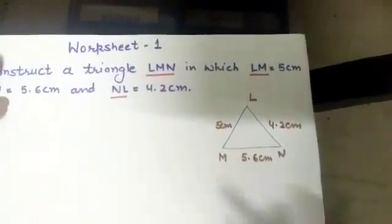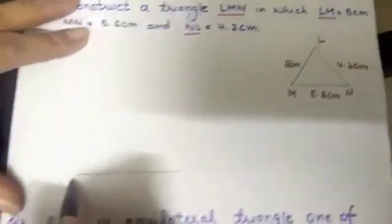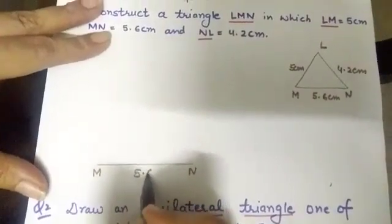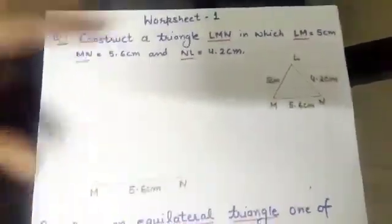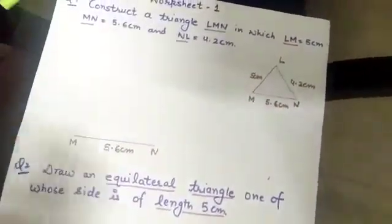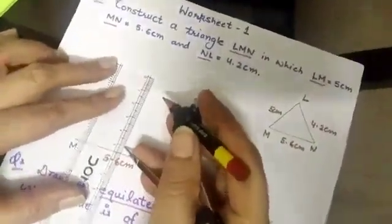Now, if we look at the rough sketch, now we know which side I have to take as a base side. MN, I have already drawn, MN is equal to 5.6 cm. Now, this side is MN. That measurement is given to us 5 cm. Open your compass with the help of ruler 5 cm. As I am doing it right now.